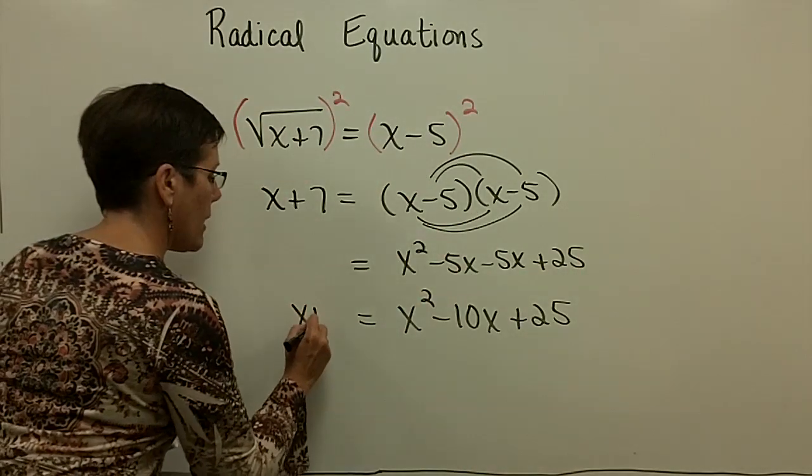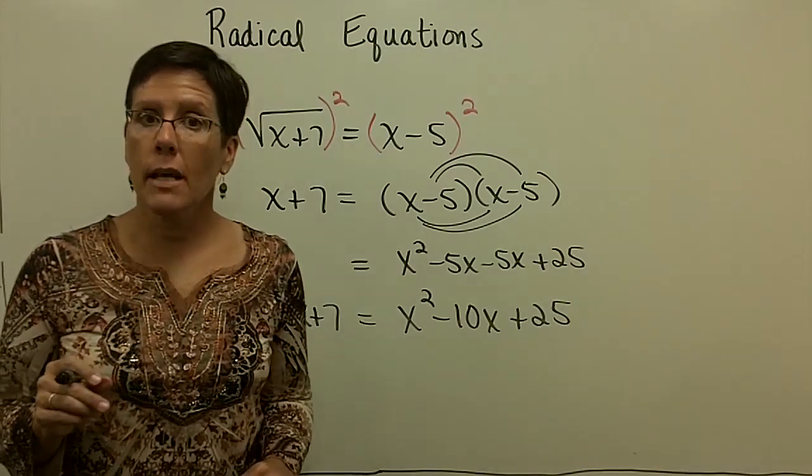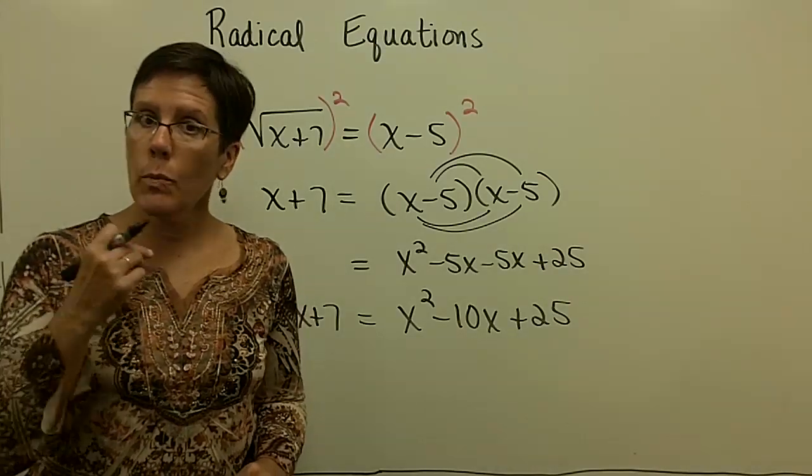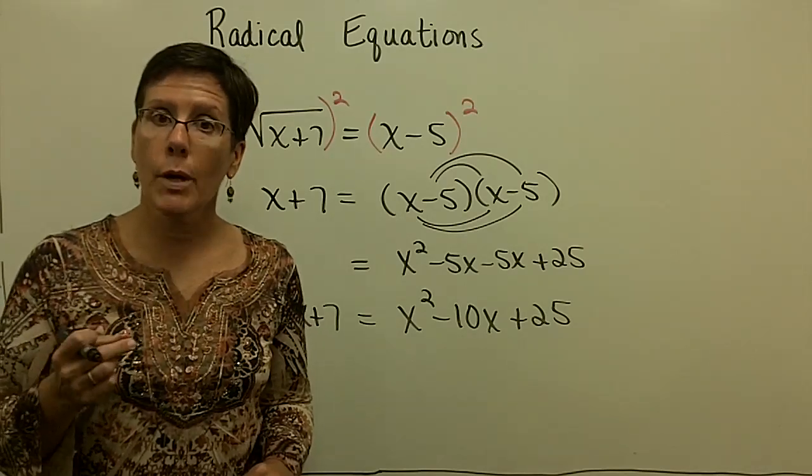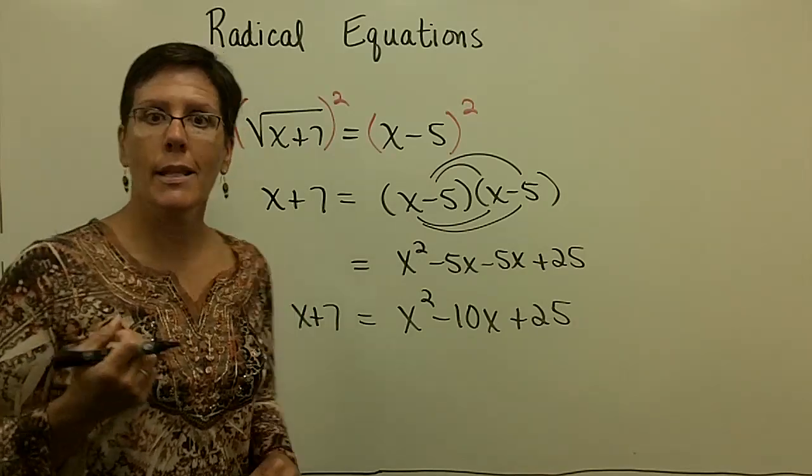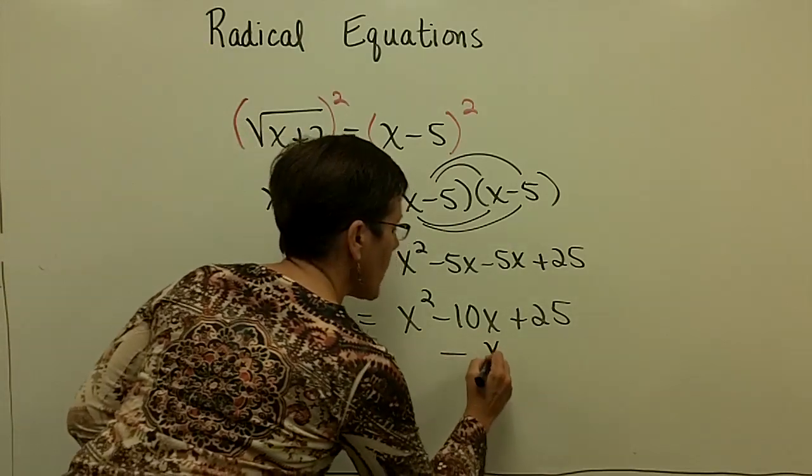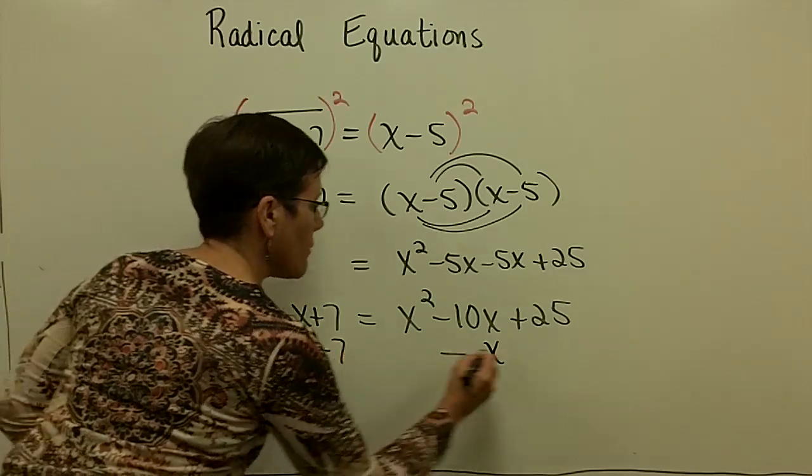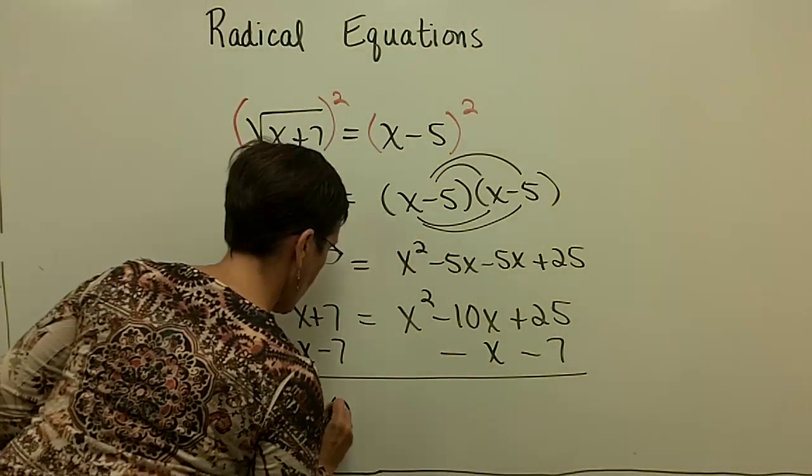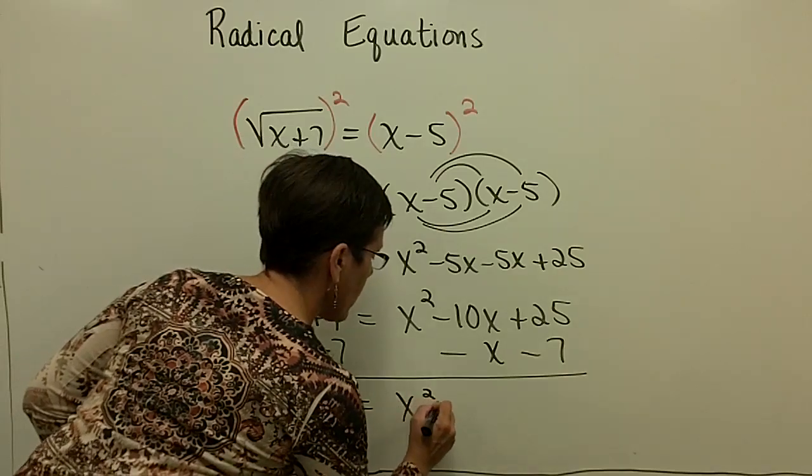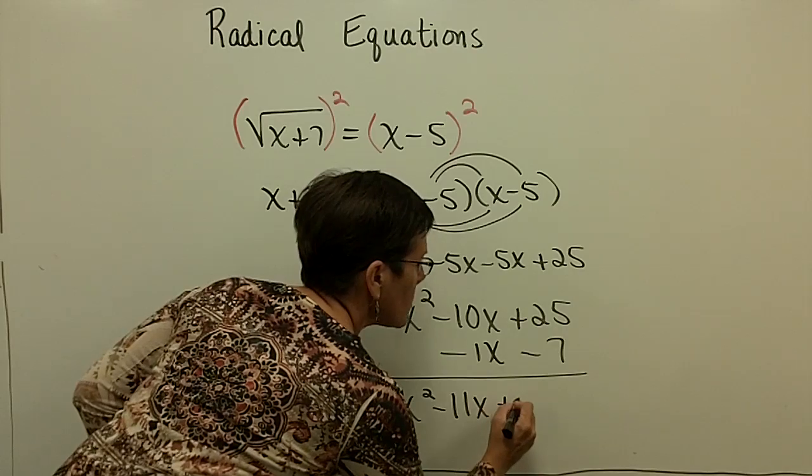That's on the right. On the left, I have x plus 7. Wow. I have an equation that I have to solve that has an x squared term in it. The only way we know how to do that yet is to solve it by factoring it and using the zero product rule. So we need to get zero on the left side of this equation. So we need to subtract x from both sides, and we need to subtract 7 from both sides. And so finally, we will now have zero over here equals x squared minus 11x plus 18.